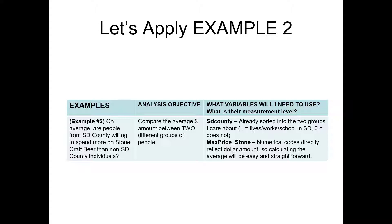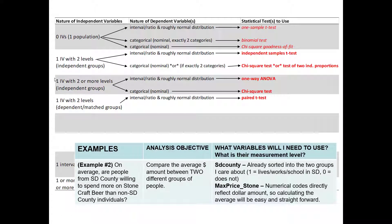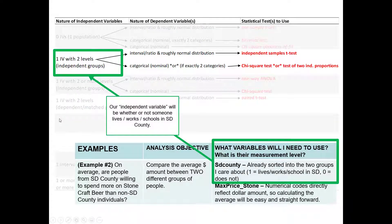Let's confirm how we got to the application of this statistical test and how we know we're making the right choice. Based on our analysis objective, we want to compare between two independent groups. If someone lives, works, or goes to school in San Diego County, they're in one exclusive group; if they don't, they belong to a different group. So this is a single independent variable — where people live — with two different levels, and they're independent groups.